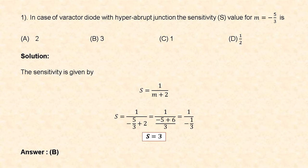In the case of a varactor diode with hyper-abrupt junction, the sensitivity value for m equal to minus 5 by 3 is: option A: 2, option B: 3, option C: 1, option D: 1 by 2. The sensitivity of a varactor diode with hyper-abrupt junction is given by the formula S = 1 / (m + 2). Substituting m = −5/3, we get S = 1 / (−5/3 + 2) = 1 / (1/3) = 3. Hence option B is correct.